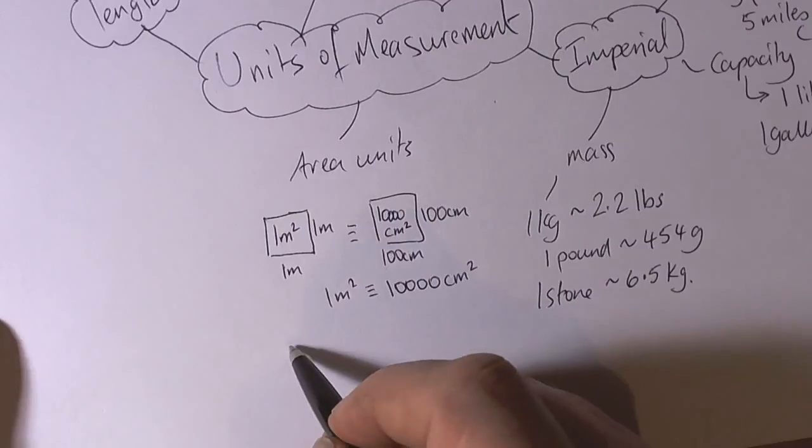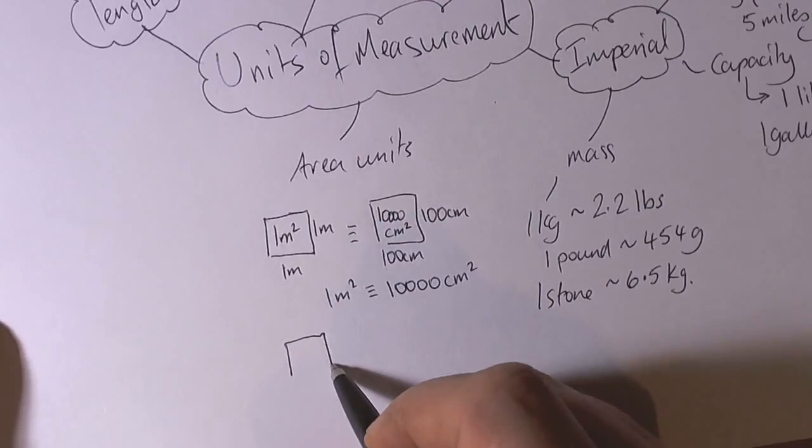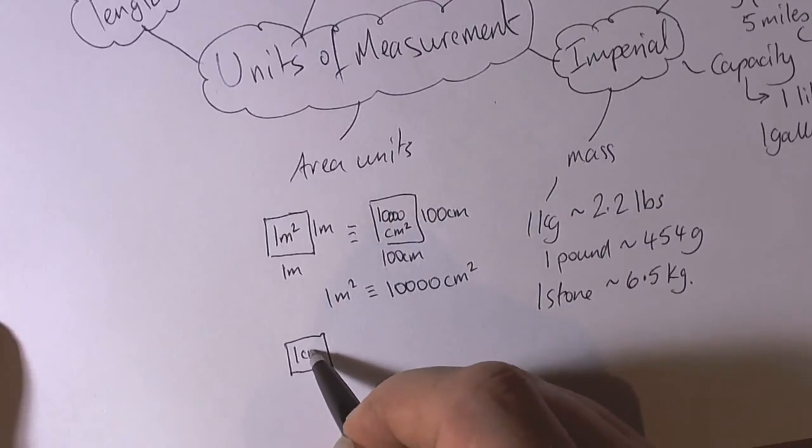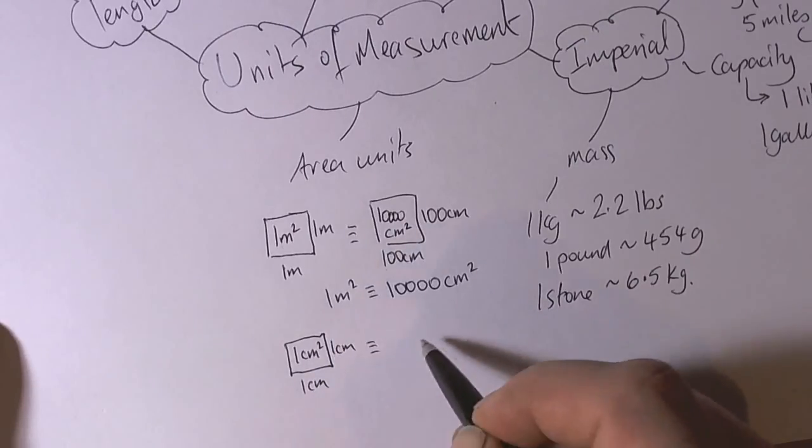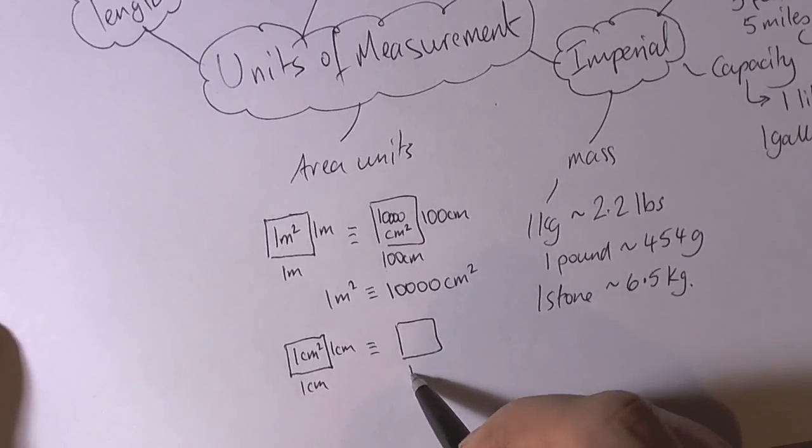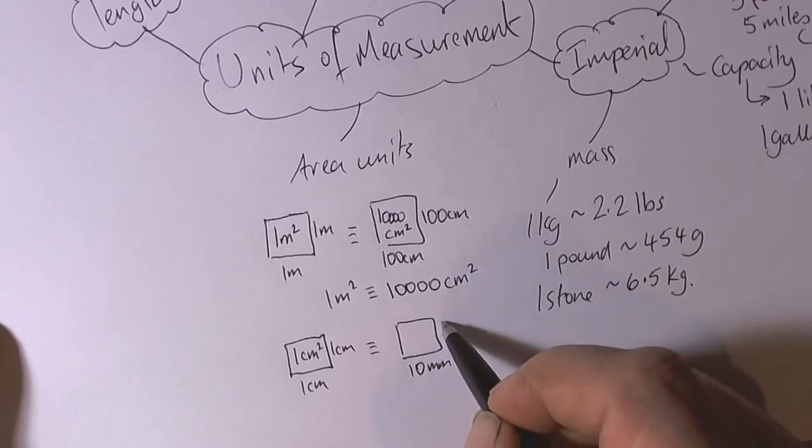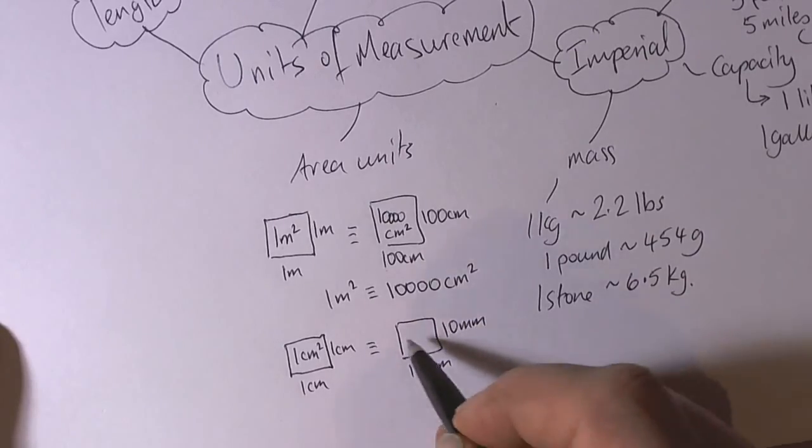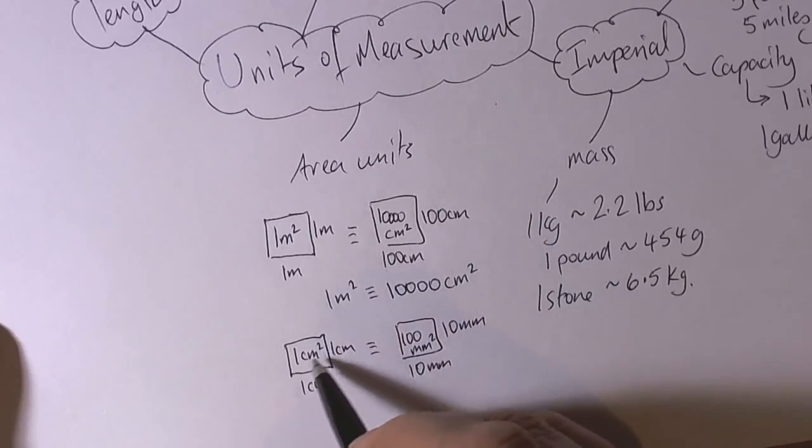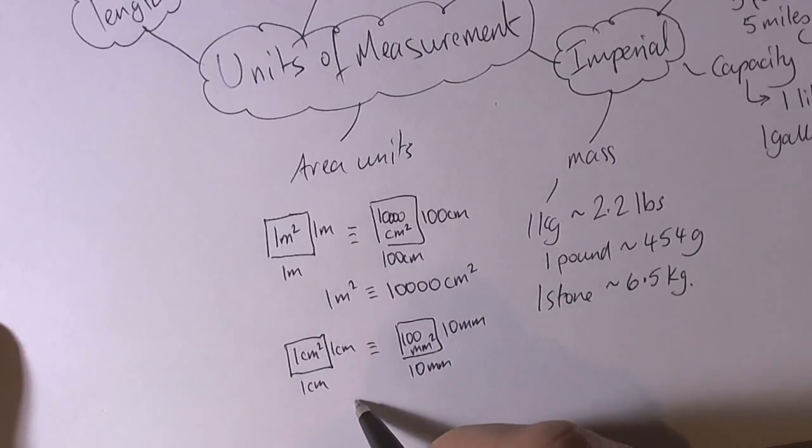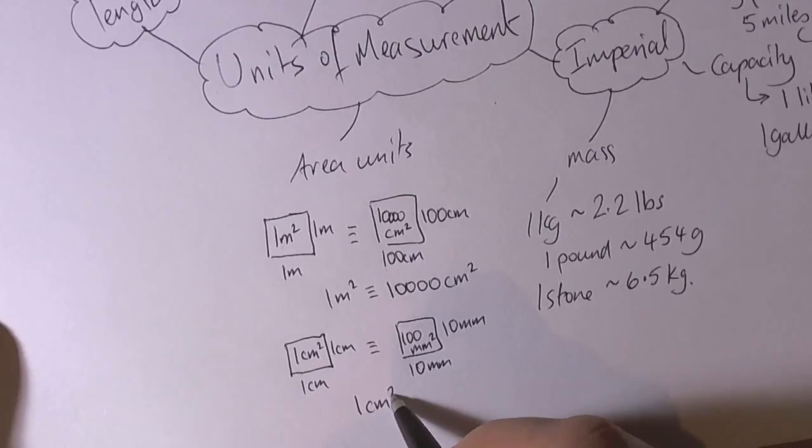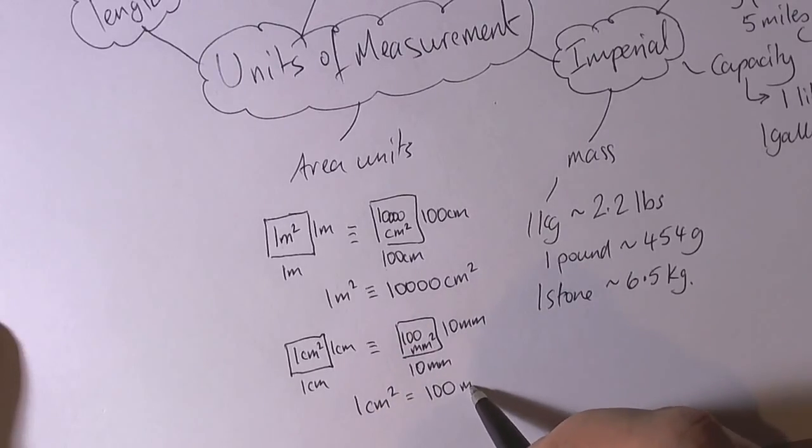Now we can do a similar thing for centimetres, so we could have a square centimetre. 1 square centimetre equals 100 square millimetres.